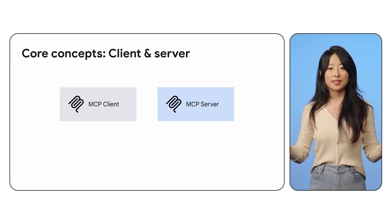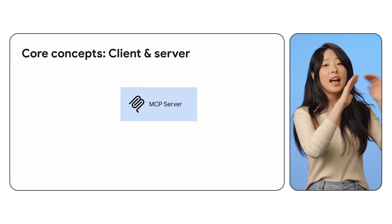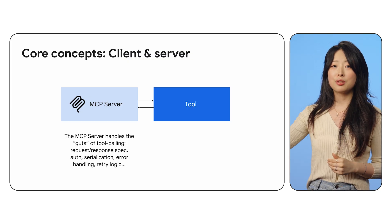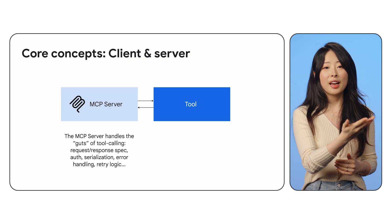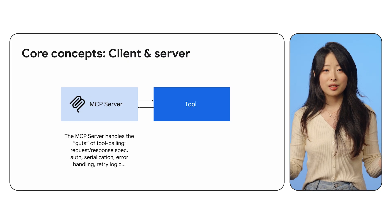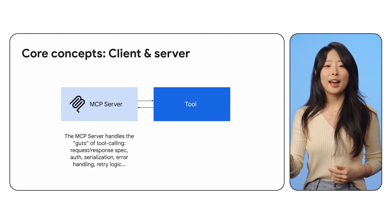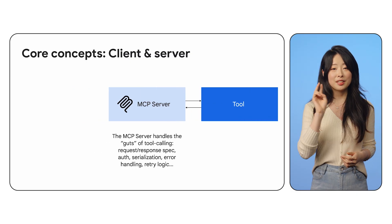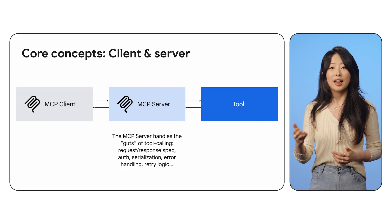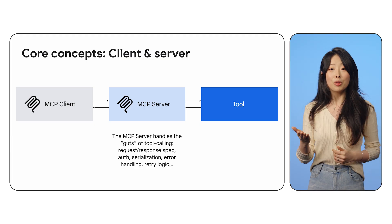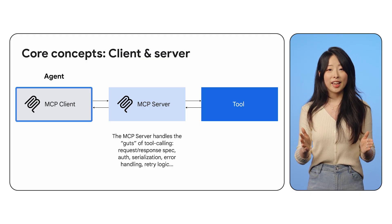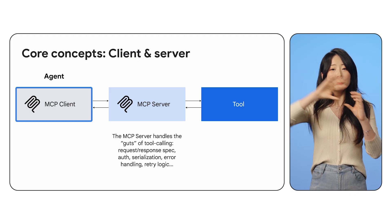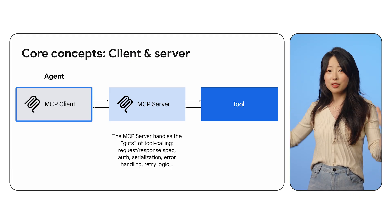Here is how it works. The MCP server exposes tools — for example, it can connect to data sources, APIs, or custom actions, enabling data fetching, API calls, or customized logic. Then we have the MCP client, which discovers and uses those tools. In most cases, your ADK agent acts as an MCP client, and it connects to MCP servers to gain new capabilities.